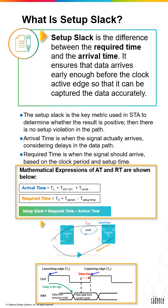The mathematical expression for setup slack is defined as the difference between the actual required time and the arrival time. A positive setup slack indicates that data arrives faster, meaning required time is greater, which helps avoid setup violations. If the required time is less than the arrival time, then the setup slack is negative, indicating a setup violation.